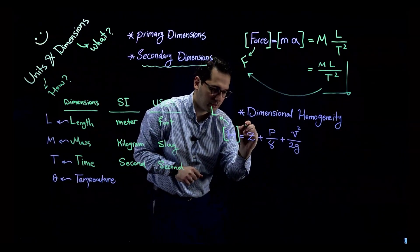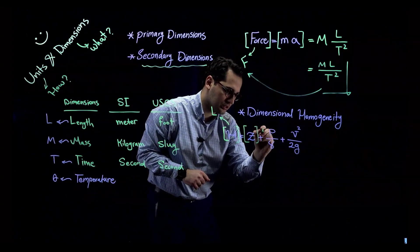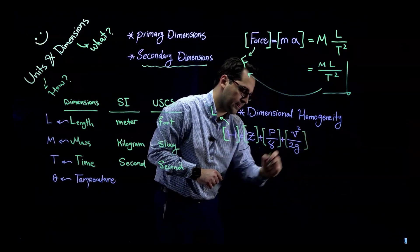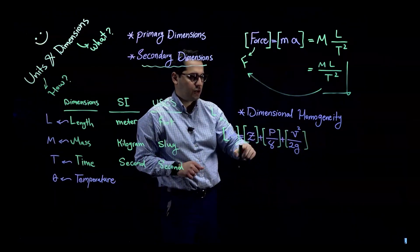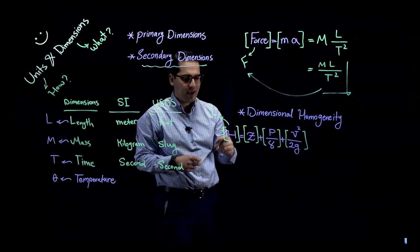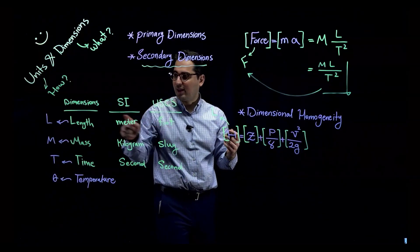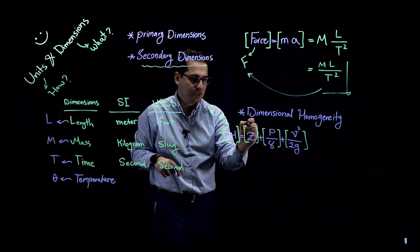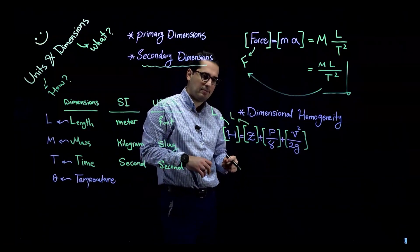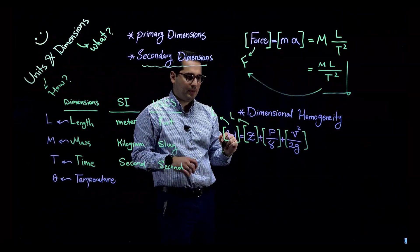Let's check each term. Starting with z, the elevation head: elevation is expressed in meters or feet, so its dimension is L. That one is straightforward — z has the dimension of L.